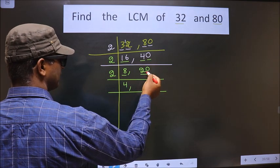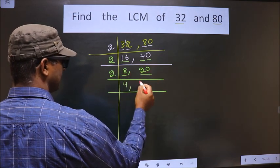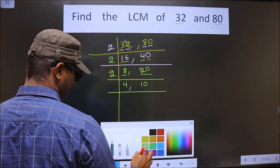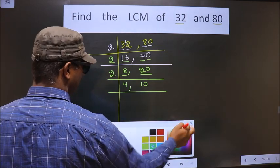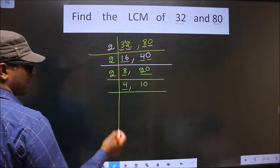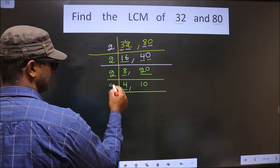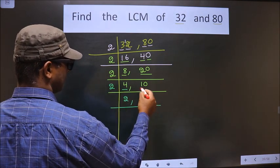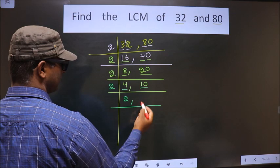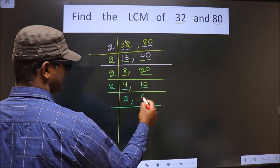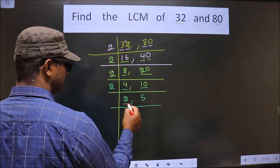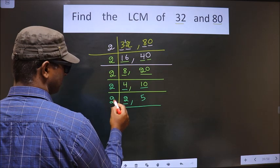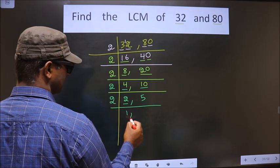Here we have 20. When do we get 20 in the 2 table? 2 tens 20. Now here we have 4. 4 is nothing but 2 twos. Here we have 10. When do we get 10 in the 2 table? 2 fives 10. Now here we have 2. 2 is a prime number, so we take 2 ones 2.